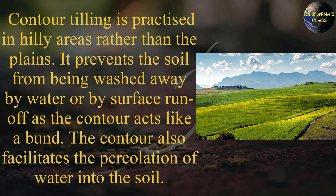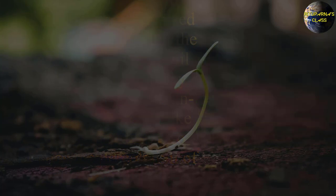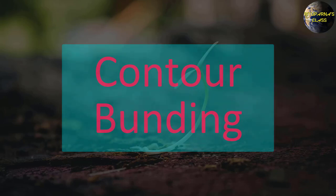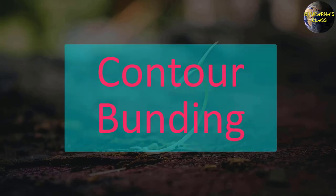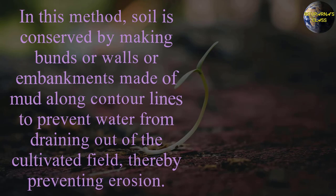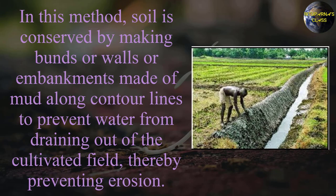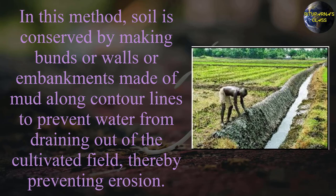The contour also facilitates the percolation of water into the soil. The last method is contour bunding. In this method, soil is conserved by making bunds — walls or embankments made of mud along contour lines — to prevent water from draining out of the cultivated field, thereby preventing erosion.